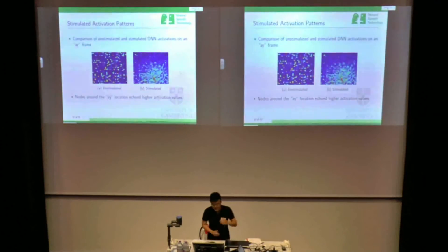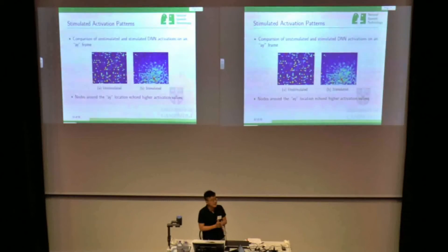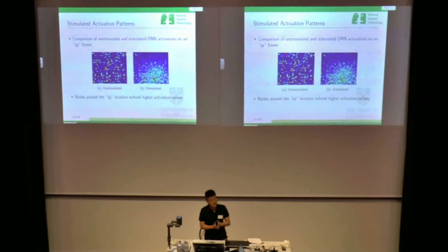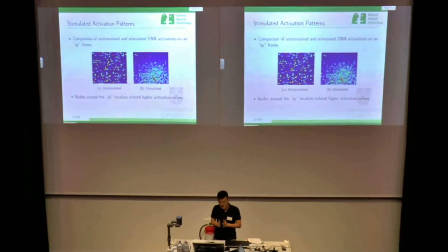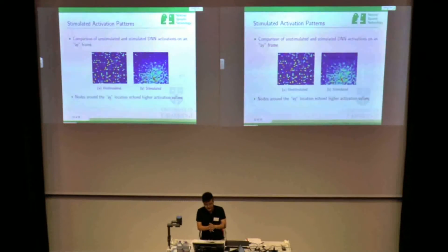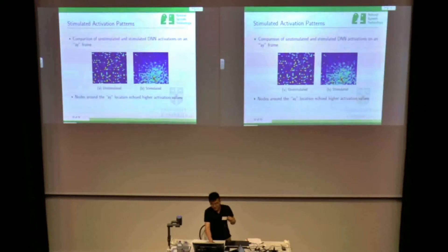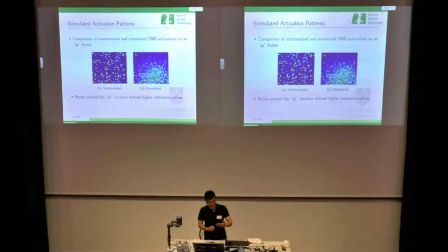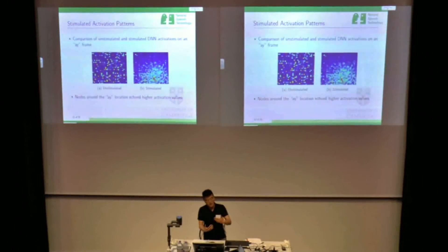The result of stimulated training is that for an unstimulated system — the default DNN — because the hidden nodes are arbitrarily ordered, we cannot get an explicit explanation of what the hidden nodes mean. But for the stimulated system, for example, given a frame belonging to the phoneme AY, the activation output around the AY location is higher than the other parts. In this way, we can better analyze what the DNN is modeling.